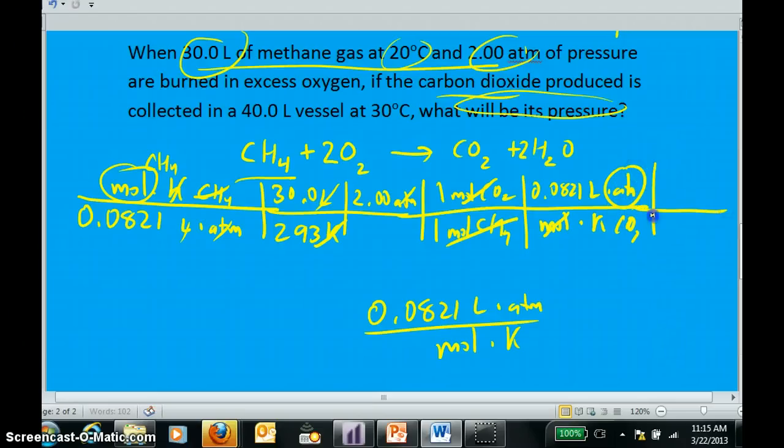But I have to cancel everything. I want to cancel the volume and temperature. And I was given a volume, 40 liters, and a temperature, 303 kelvins. Kelvins cancel, liters cancel, and I have successfully found the atmospheric pressure of the product.